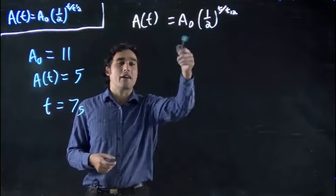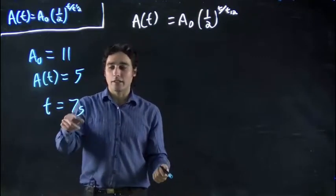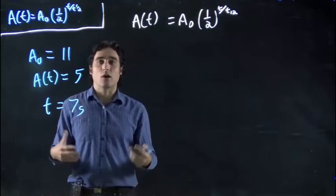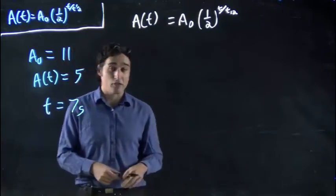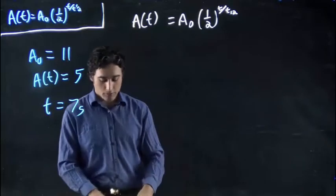Well, we want to figure out what the half-life time is. It's been 7 seconds. How long does it take for things to divide by 2? To have half the amount, to have a half-life occur. So we're going to plug these numbers in.